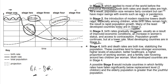Stage four is when you have lower death and birth rates — both birth rate and death rate are low, stabilizing the population. These countries tend to have stronger economies, higher levels of education, better healthcare, a higher proportion of working women, and a fertility rate hovering around two children per woman. Most developed countries are in stage four.